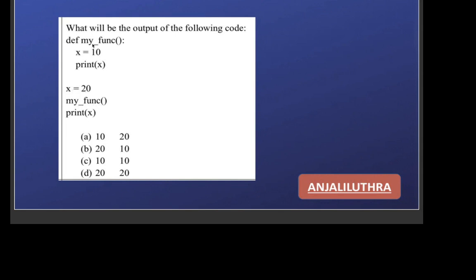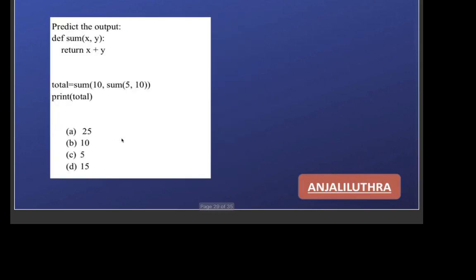What will be the output of this code? x is 20 at the start, the function is called, and inside the function x is assigned 10, then x is printed — so obviously 10 is printed there. But since no global keyword is used, this is the function's own local variable — it has no relationship with the outer x. When we return and print x again, it prints its own outer x which is 20. So the answer will be 10 and 20 on two different lines, since no global keyword is used.